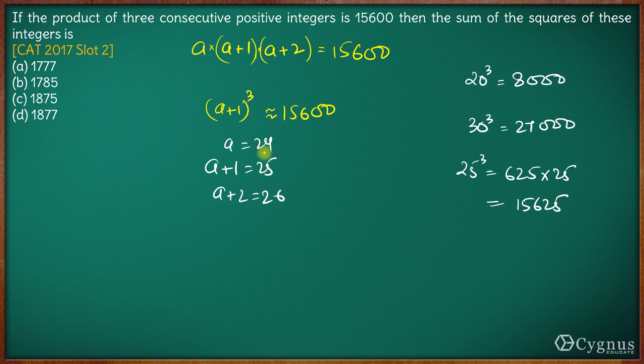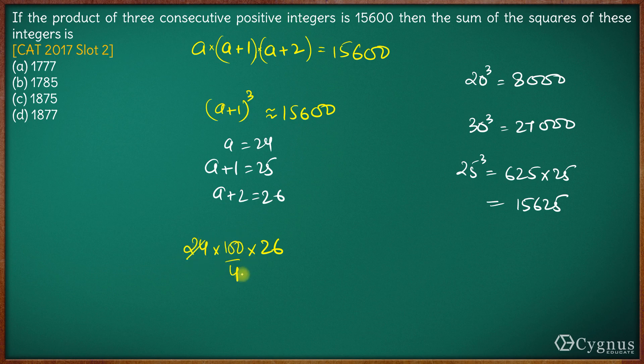So let's see what is the product of these numbers: 24 × 25 × 26. So 25 can be written as 100/4, 24/4 is 6, so I have 6 × 26 is 156 × 100.